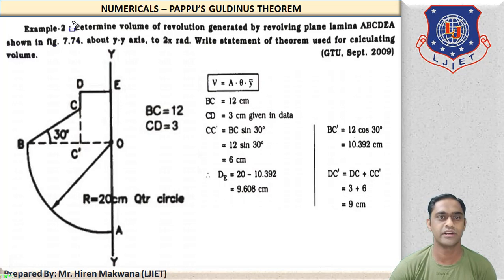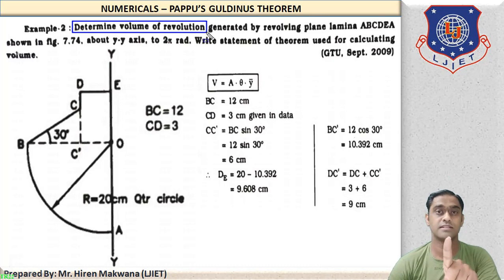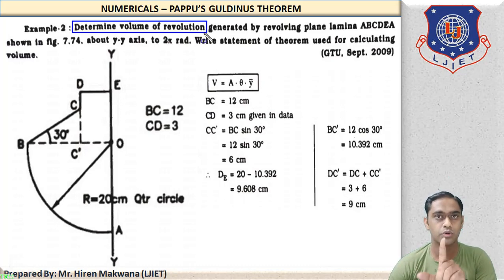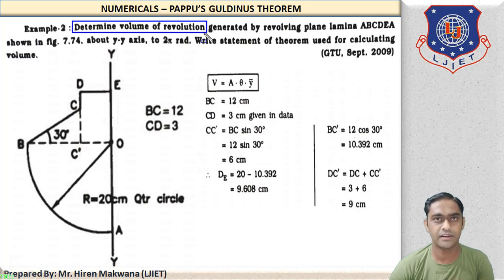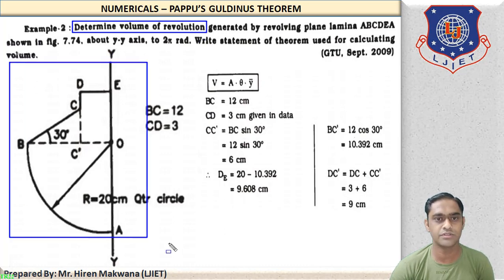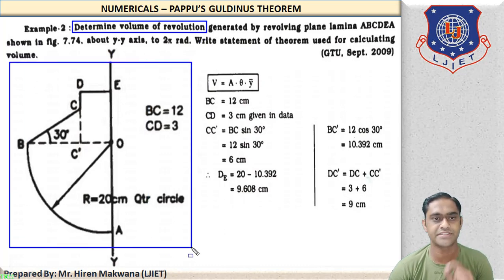Determine volume of revolution — so this is the example of volume, not area. Must remember that whenever we have to find volume of revolution, the given figure must be an area. Whenever volume of revolution we have to calculate, assume that the given figure is essentially of area itself.